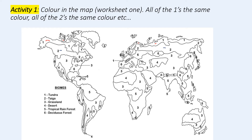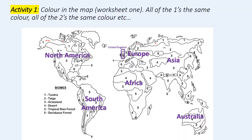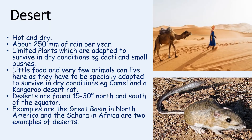You can then label all the different parts of the map — we've got the United Kingdom and we can see what biomes are in the UK, as well as what biomes are in Asia, Australia, Africa, Europe, North America and South America.